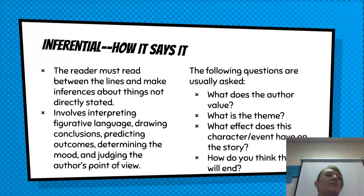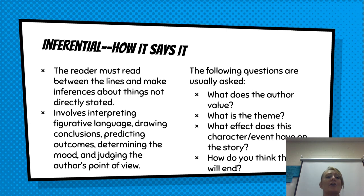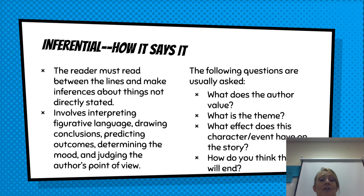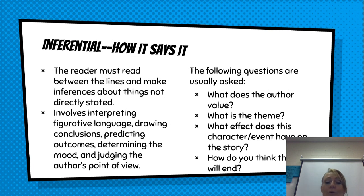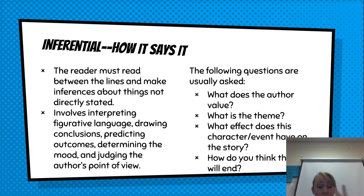If we think about our second time reading a text — that's how it says it — that's when we start the inferential level of reading comprehension. When we are doing the inferential level, we are inferring things, reading between the lines about things that are not directly stated. This includes interpreting figurative language, drawing conclusions, predicting outcomes, determining mood, and judging the author's point of view. Those are all within that inferential, or 'how it says it,' stage.